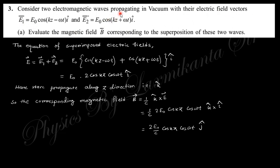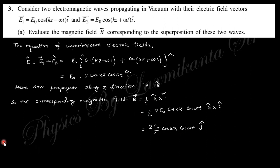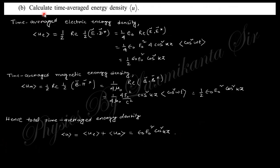Next question: consider two electromagnetic waves propagating in vacuum with given electric field vectors. Evaluate the magnetic field corresponding to the superposition of these two waves. Superposing the two waves by vector addition gives a combined electric field. Since propagation is along the z-direction (k̂), the corresponding magnetic field is B = (1/c) k̂ × E, which gives the resulting expression.